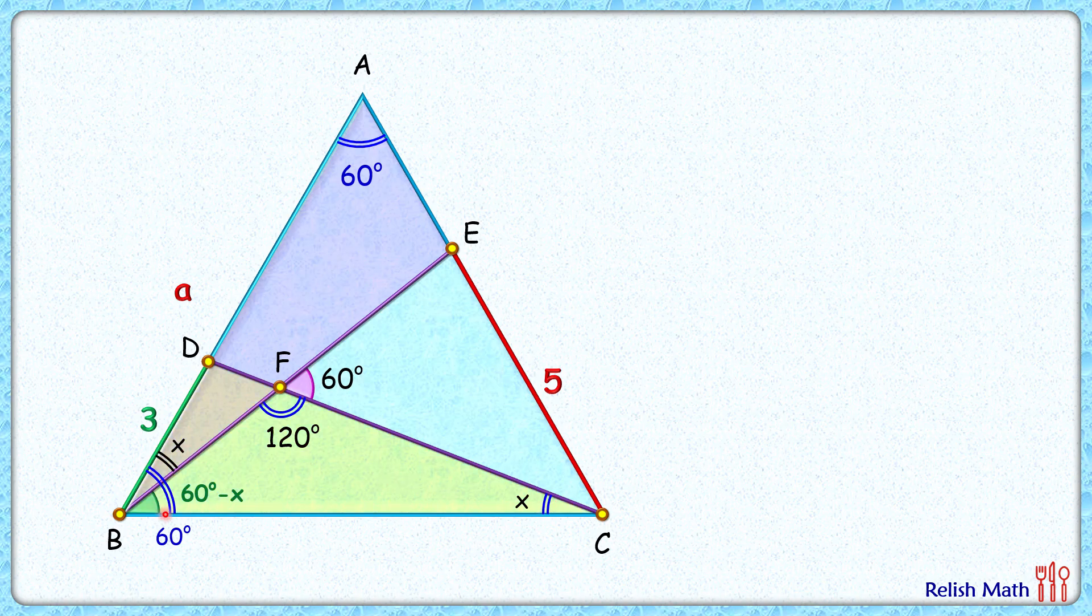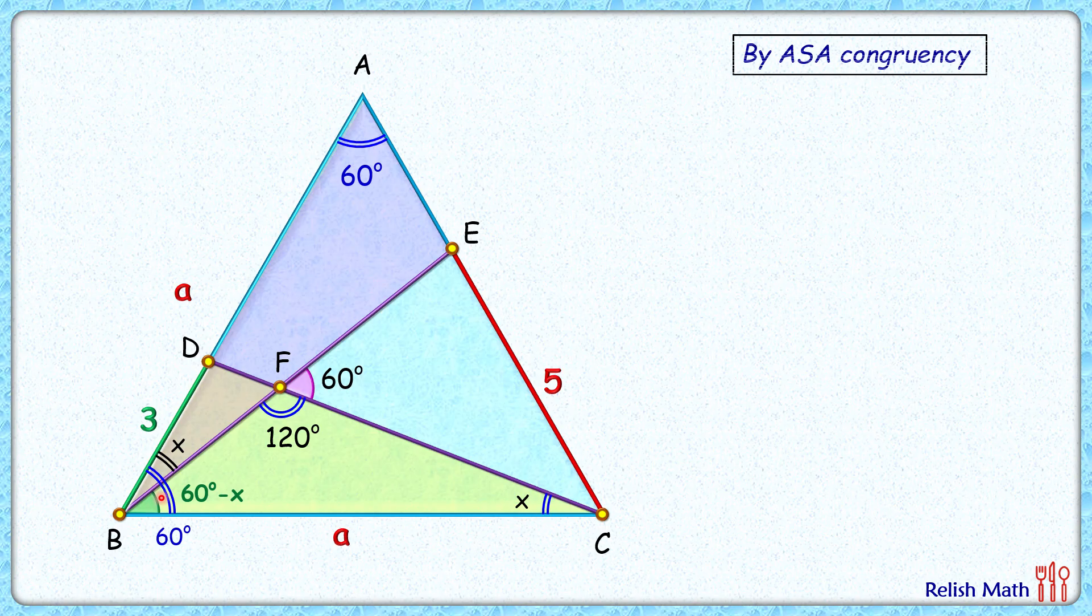So by Angle-Side-Angle (ASA), these two triangles are congruent. That is, this pink triangle is congruent to this yellow triangle. As the triangles are congruent, their corresponding parts are equal.